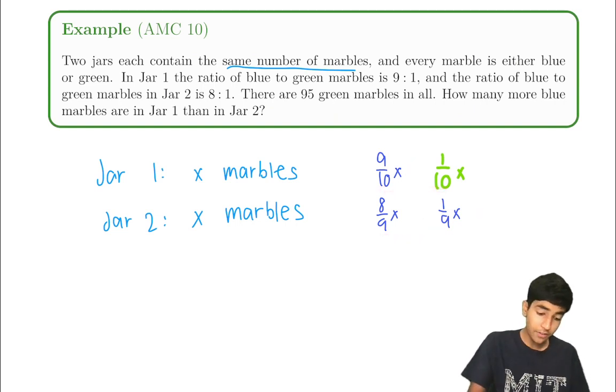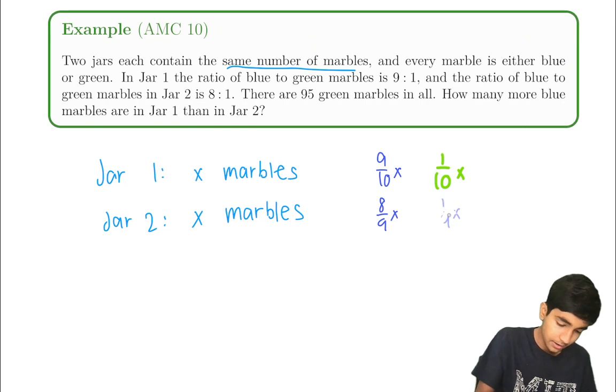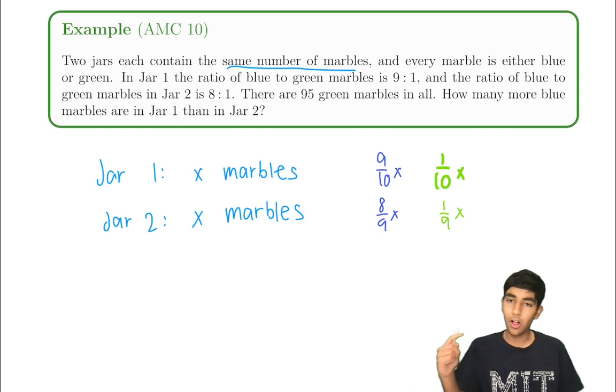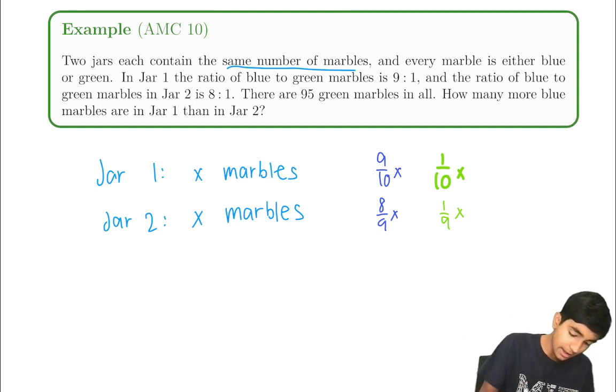So there's 95, let's write this in green, one ninths x. So there's 95 green marbles in all. One tenths x plus one ninths x is 95.